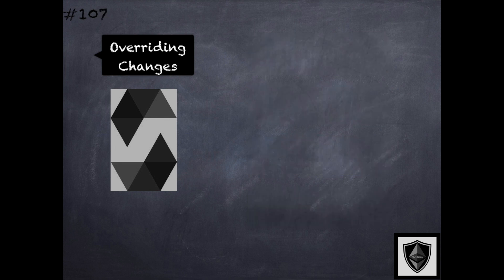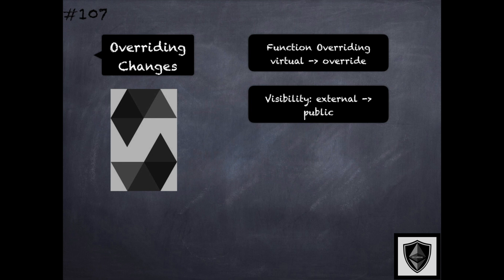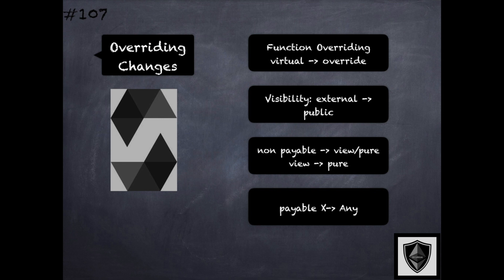Functions in the derived classes can override the virtual functions in their base classes to redefine the logic within them. These overriding functions may also change the visibility of the overridden function, but this can only be done from external to public. The mutability of these functions may also be changed but only to a more strict one: non-payable mutability can be changed to either view or pure, view mutability may be changed to pure, and payable mutability is an exception and cannot be changed to any other mutability.